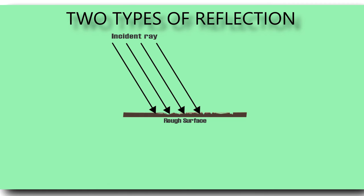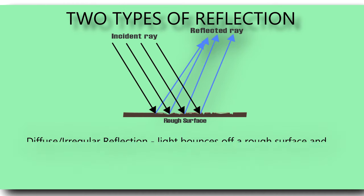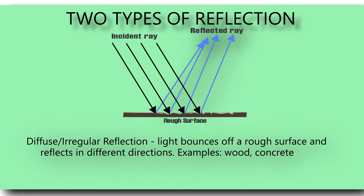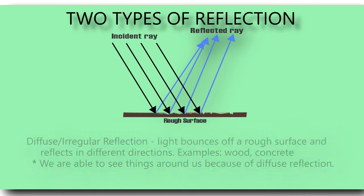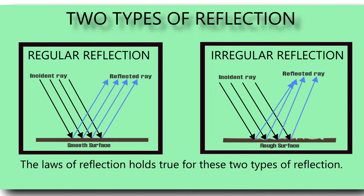When light strikes a rough surface like wood, the reflected rays go in different directions — we call this diffuse reflection or irregular reflection. We are able to see objects around us because of diffuse reflection. In both types of reflection, the laws of reflection always hold true.